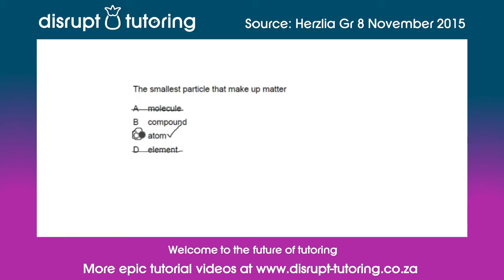It's not a compound either, because a compound is a molecule that has more than one different element in it. For example, a molecule of water is a compound because it has two hydrogen atoms and one oxygen atom to make H2O.